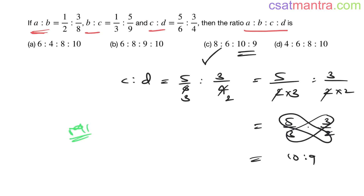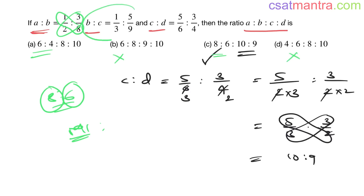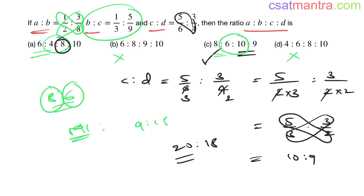If you use the third mantra, it's clearly visible — a:b = 8:6 satisfies, b must be bigger. For b:c, checking 9:15, b is bigger and it satisfies. For c:d, c should be bigger; here c is less than 10, so you eliminate that. Using third mantra it's just one step; using first mantra it takes three iterations. Practice helps — it won't take more than 30 seconds.